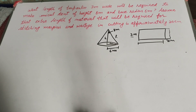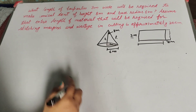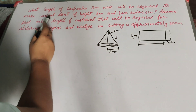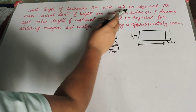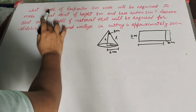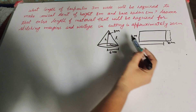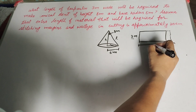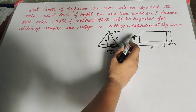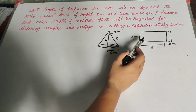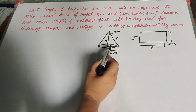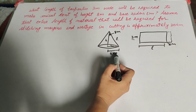Hello friends, welcome to my channel. In this video we discuss what length of tarpaulin, 3 meter wide, will be required to make a conical tent of height 8 meter and base radius 6 meter. In this question we find the length of tarpaulin — if the length of tarpaulin is l, that is 3 meter wide, it is used to make a conical tent.